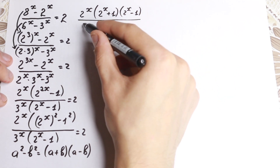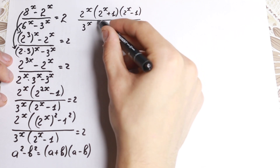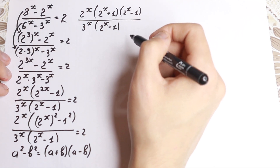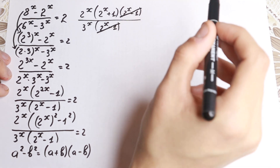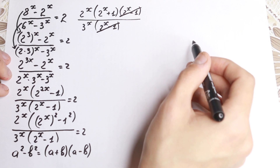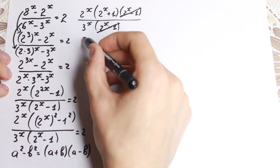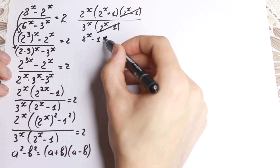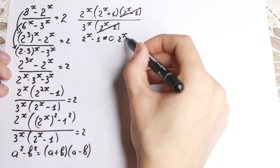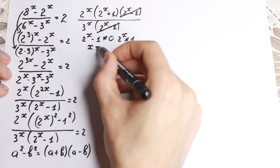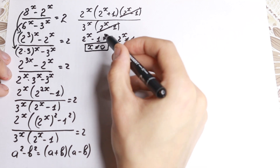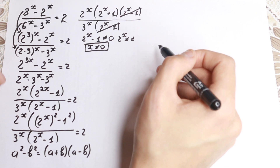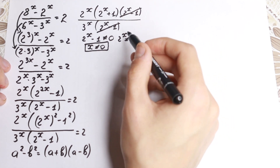We are dividing by 3 to the x times 2 to the x minus 1, and 2 to the x minus 1 appears in both numerator and denominator, so we can cancel it. We need to mention that 2 to the x minus 1 is not equal to 0, meaning 2 to the x is not equal to 1, and therefore x is not equal to 0. This is an important condition. Also, if x equals 0 we'd have 1 minus 1, confirming x is not equal to 0.